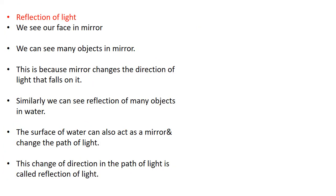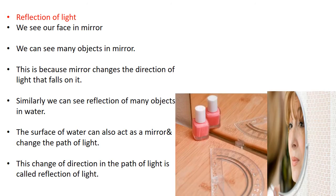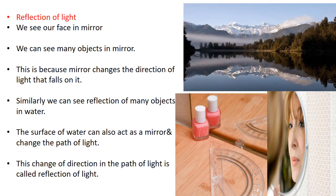Reflection of light — what is this? We see our face in a mirror and we can see many objects in the mirror. This is because the mirror changes the direction of light that falls on it. Similarly, we can see the reflection of many objects in water. The surface of water also acts as a mirror and it can change the path of light. This change of direction in the path of light is called reflection of light.